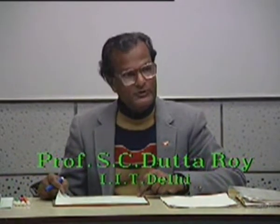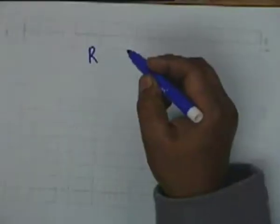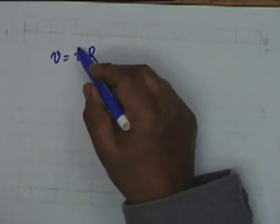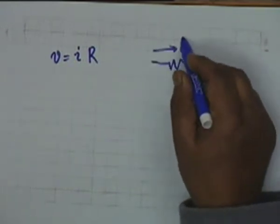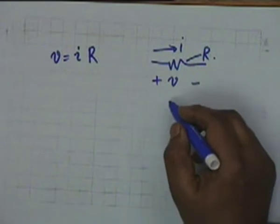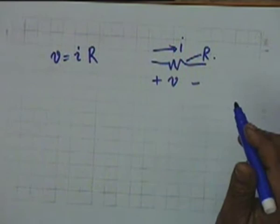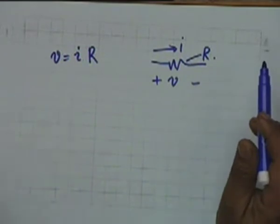Most of this material is known to you, and therefore what we are doing is essentially a review of knowledge you already have. A linear resistance is defined by Ohm's law: the potential difference across its terminals is proportional to the current that flows in it, V and I, and the value is R. Experimentally, the voltage drop V is proportional to I—the more current flows, the more the drop—and the proportionality constant is given the name resistance, denoted by R.